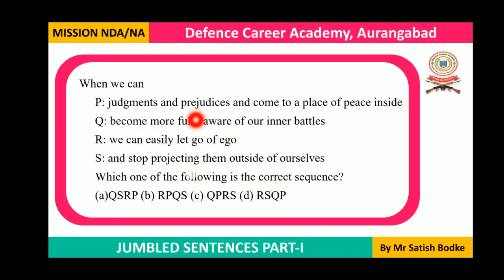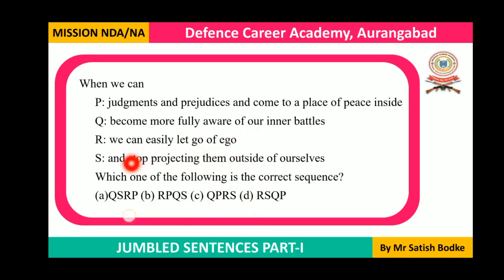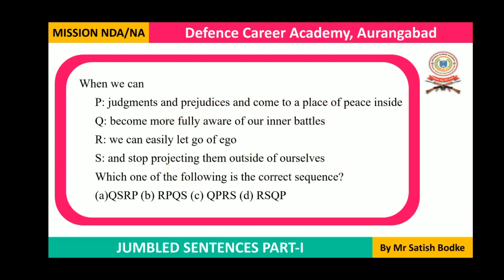'And stop projecting them outside ourselves' — 'become' is a verb and 'stop' is another verb joined by 'and,' so S (the 'and stop' part) comes after Q. In option A, S follows Q, so the sequence Q-S gives us: 'when we become more fully aware of our inner battles and stop projecting them outside ourselves.' Then another clause begins: 'we can easily let go of ego, judgments, and prejudices and come to a place of peace inside.' Option A is correct.